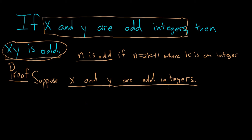So in our problem, x and y are odd integers. So then we'll just go ahead and write this down for x and y. So this means